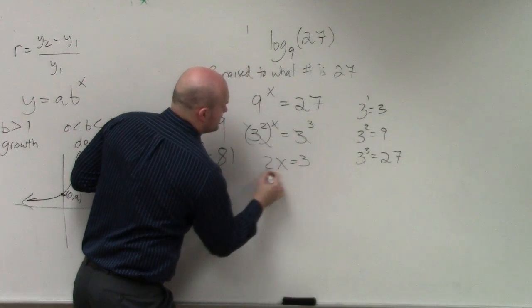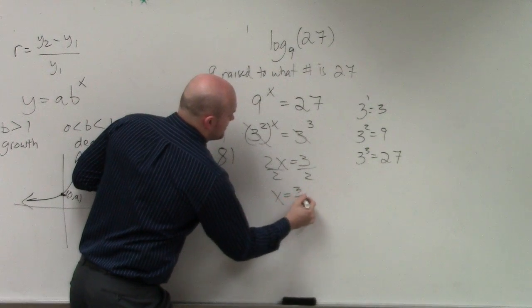So now, 2x equals 3. Divide by 2. Divide by 2. x equals 3 halves.